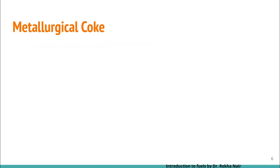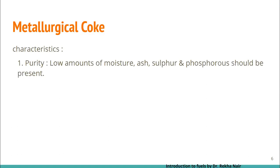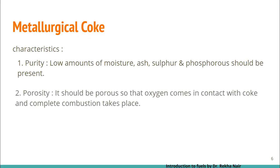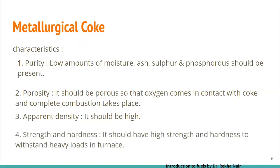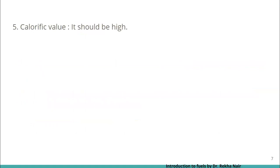Now let us talk about metallurgical coke and its characteristics. Metallurgical coke should have the following characteristics. First, purity: low amount of moisture, ash, sulfur, and phosphorus content should be present. If we talk about porosity, it should be porous so that the amount of oxygen coming in contact with the coke will be high and complete combustion takes place. Apparent density should be high. The strength and hardness should be high so as to withstand heavy loads of the furnace. Calorific value should be high, that is, the amount of heat liberated on burning should be high.